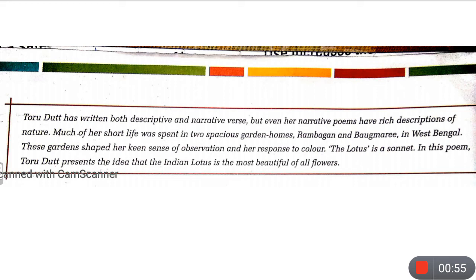Much of her short life was spent in two spacious garden homes — Rambagan and Baugmaree — in West Bengal. These gardens gave Toru Dutt a keen sense of observation and her response to color. The Lotus is a sonnet.